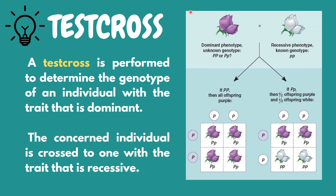A monohybrid cross is a cross between two organisms with different variations at one genetic chromosome of interest. Based on the example, it is the flower color. In order for us to easily solve a monohybrid cross problem, we use a box that organizes the genotypes of the parents that will be crossed, just like what we used in our example.